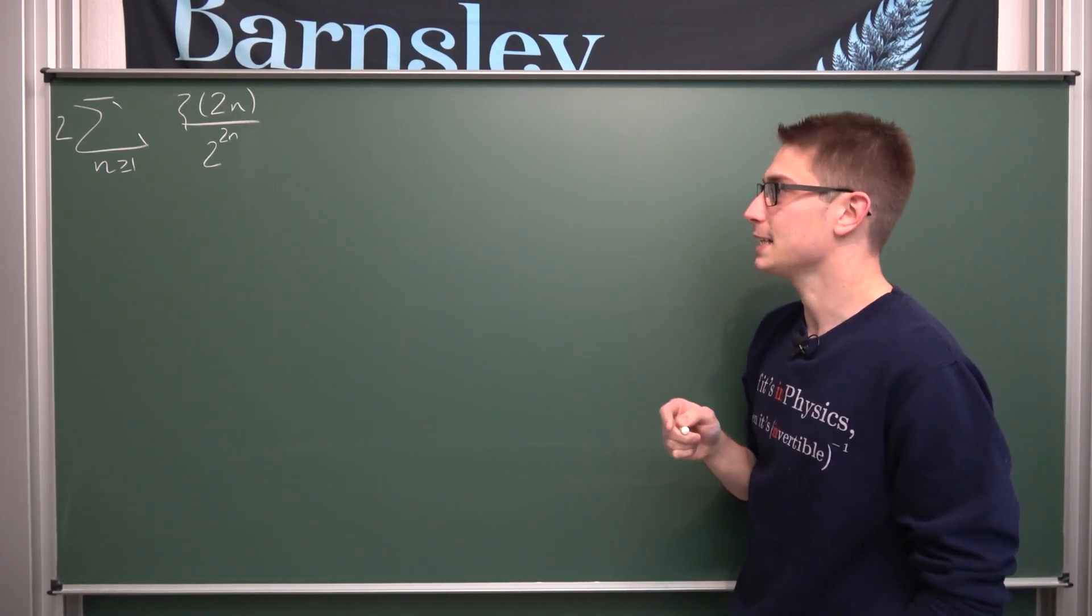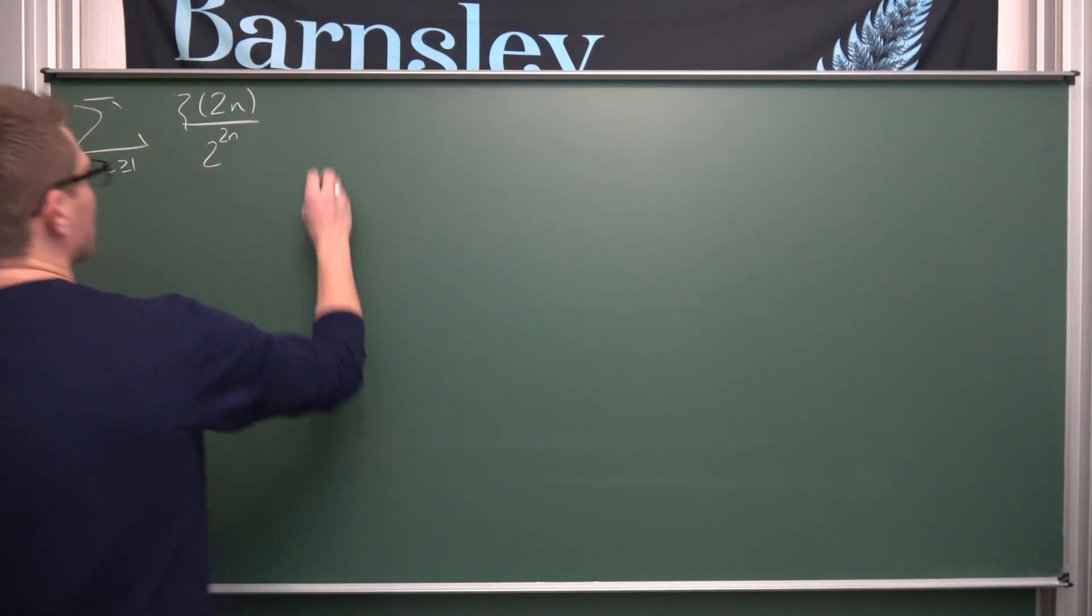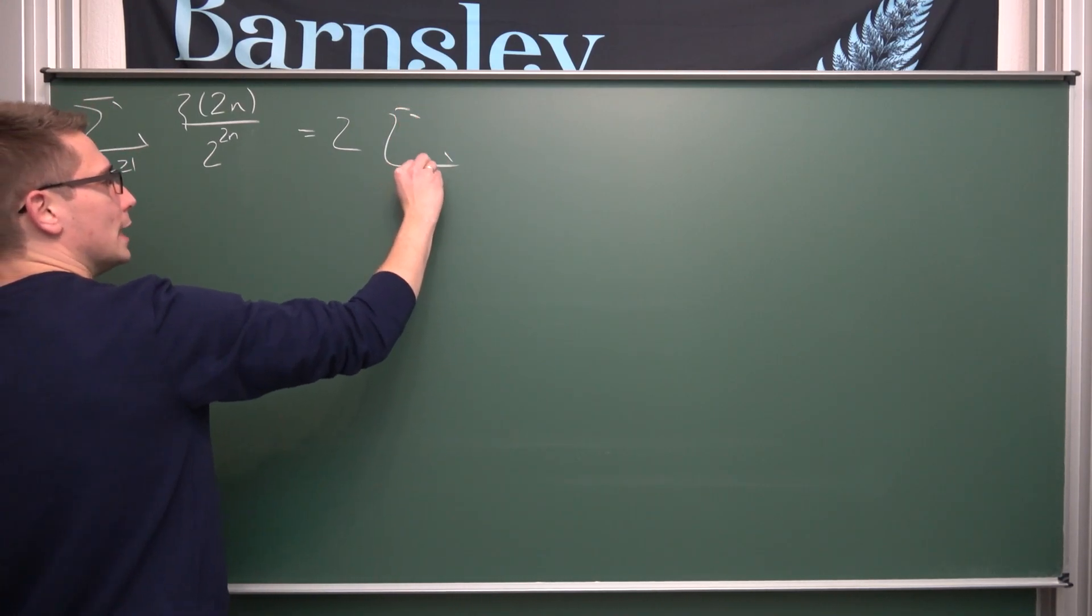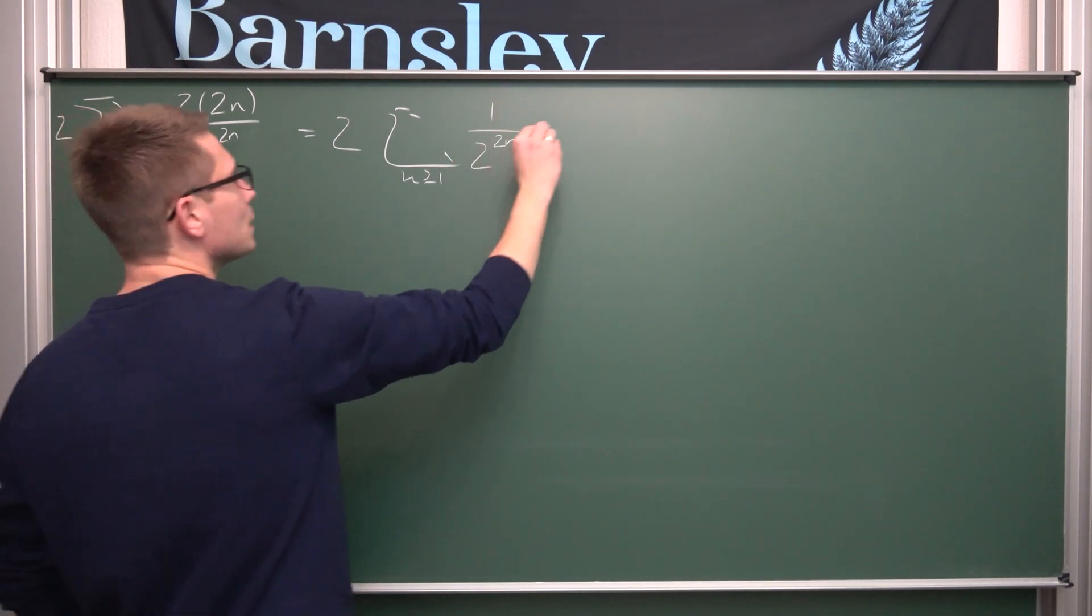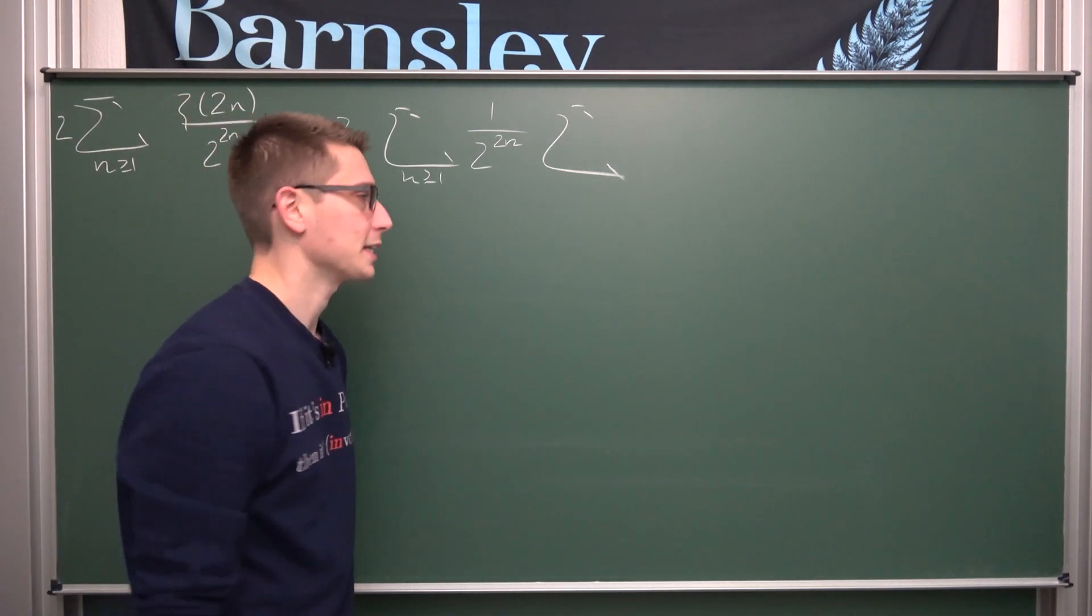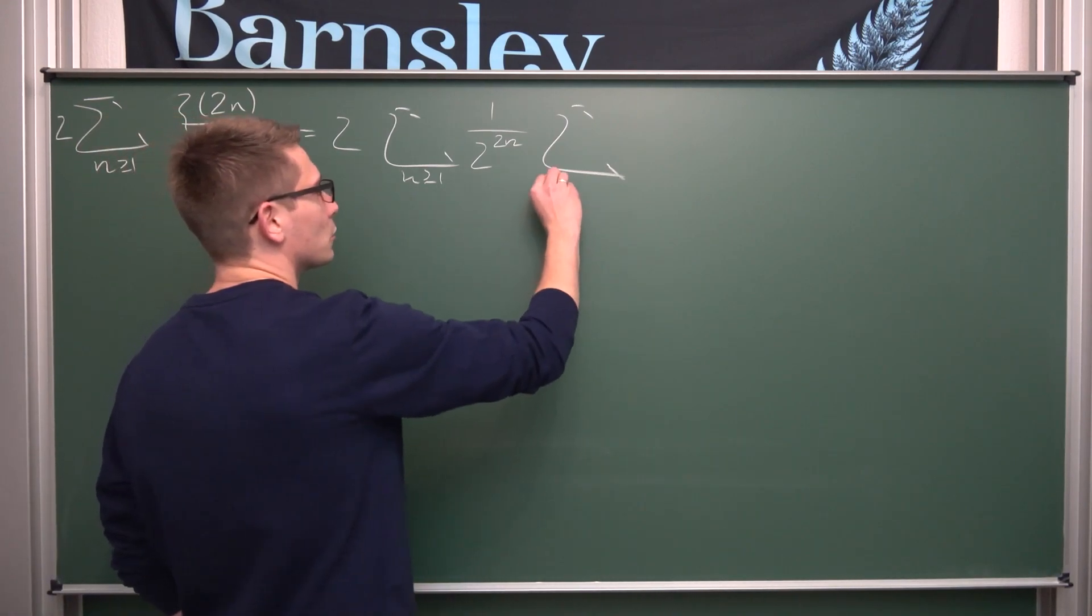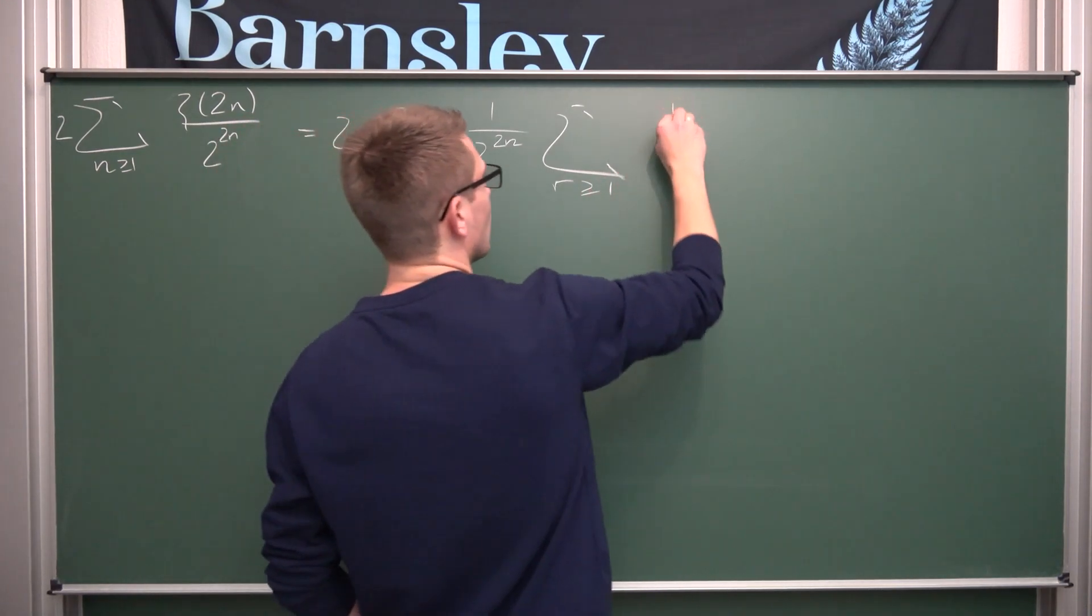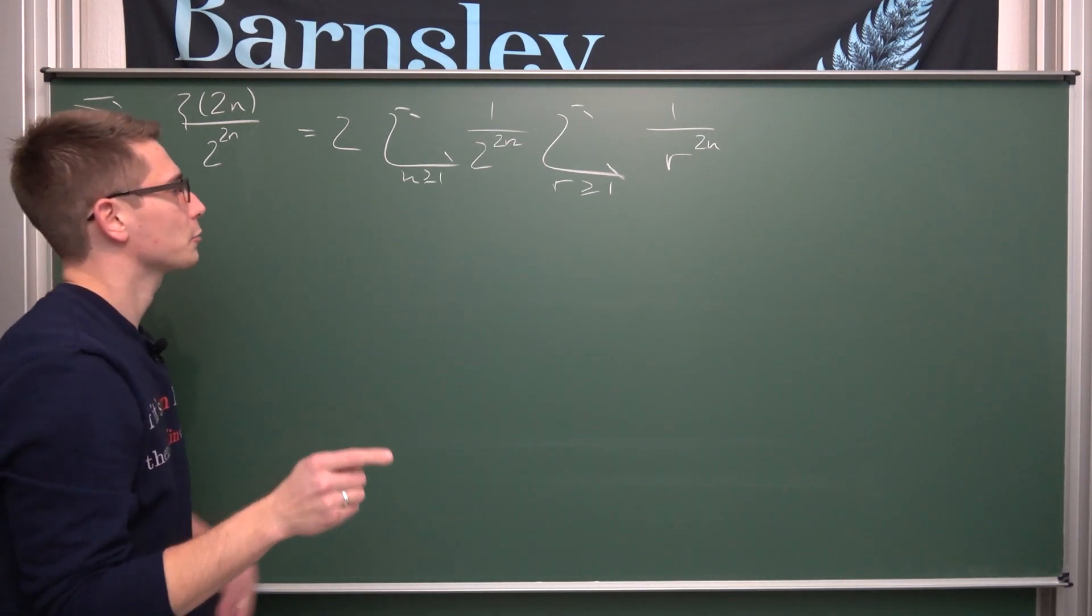Also we got zeta in here, meaning we can turn this into a series representation. Leaving us with 2 times the infinity sum where n is greater or equal to 1 of, and now we have 1 over 2 to the 2n-th power. Then we have yet another infinity sum where r is greater or equal to 1. Riemann's zeta starts at 1 of 1 over r to the 2n-th power. And this is cool, this is kind of cool. I mean both have to the 2n-th power.